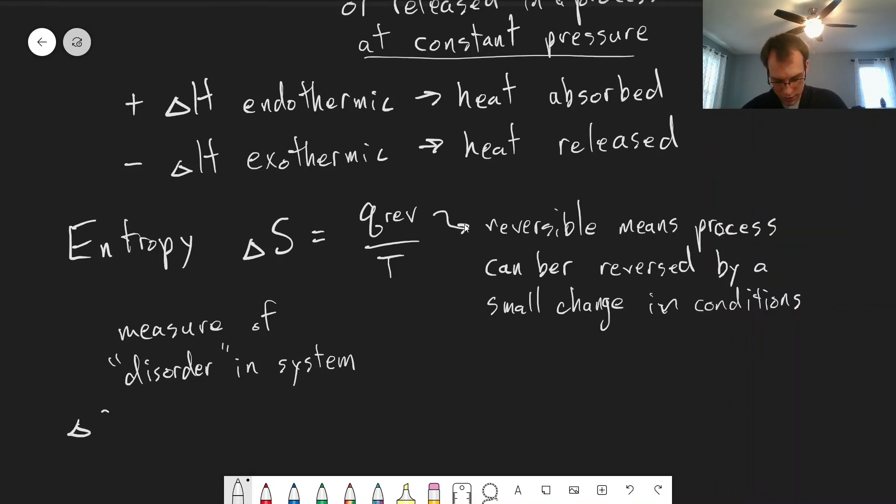And so if we're thinking of a reaction, delta S measures the change of entropy from the reactants to the products.